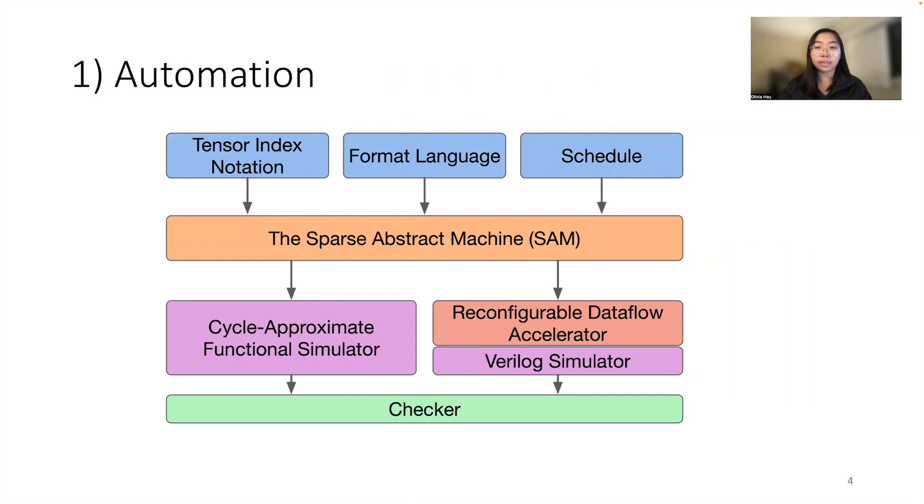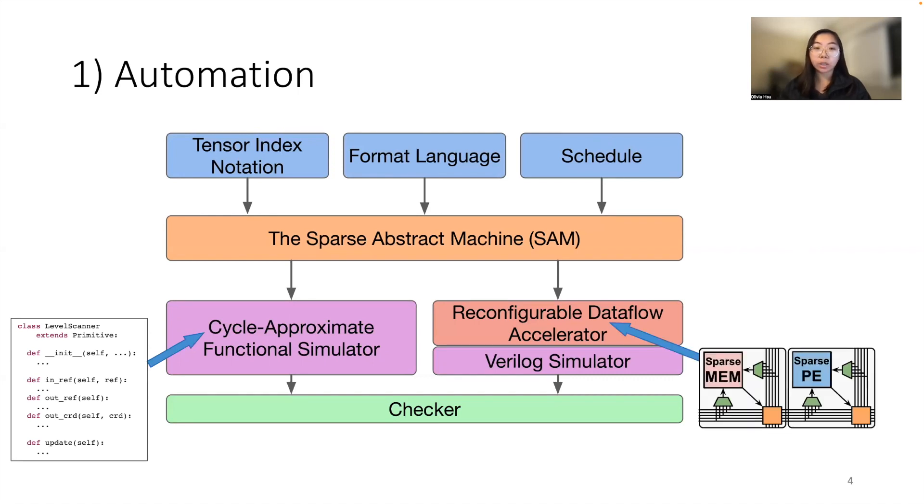The first thing that needs to be hand implemented is the behavior of the abstract primitive in our cycle approximate functional simulator written in Python. The second thing is the actual hardware module implementation of that SAM primitive in our sparse CGRA using Verilog or Verilog like language. Besides that, everything else in the flow is completely automated.